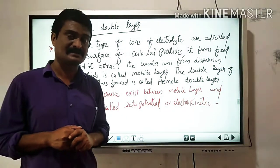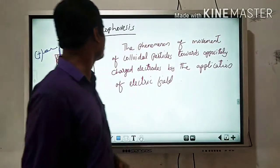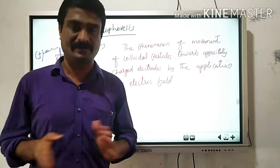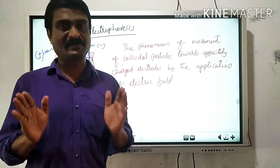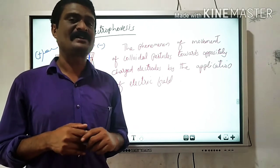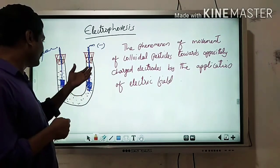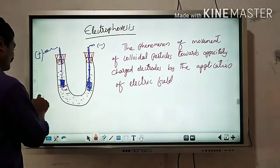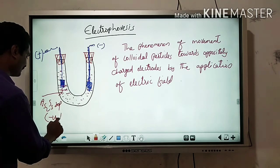Now we will discuss the important electrical property of colloidal particles: electrophoresis. The phenomenon of existence of charge on a colloid is shown by electrophoresis. For example, a colloidal solution of arsenic sulphide sol — which is negatively charged — is taken in a U-tube fitted with two platinum electrodes.